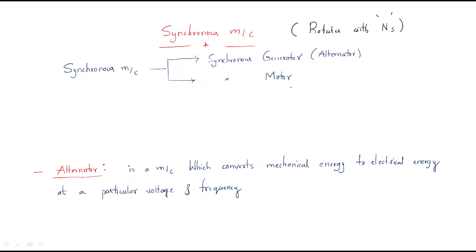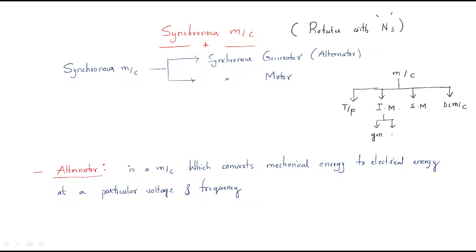In electrical machines, we have a number of machines available. Let's recollect: we have transformers, induction machines, synchronous machines, and DC machines. For induction, synchronous, and DC machines, each can be further subdivided into a generator as well as a motor — the same phenomena everywhere.